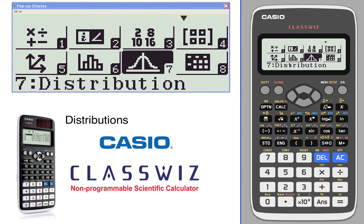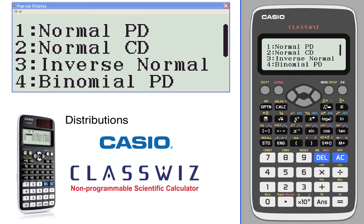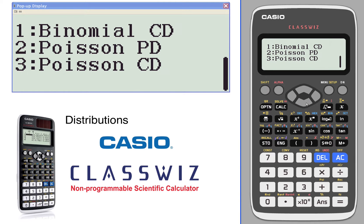Let's have a look at distributions. That's icon number seven. We have normal probability density, normal cumulative density, inverse norm, binomial P, binomial C, Poisson PD, and Poisson CD.